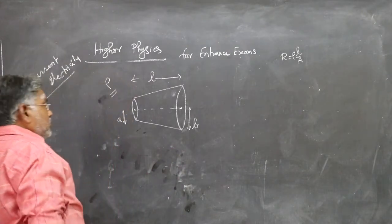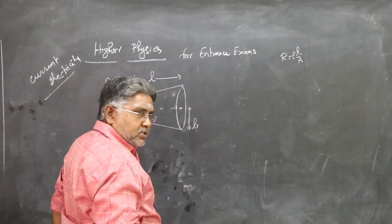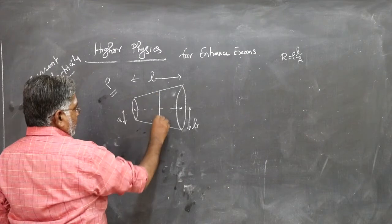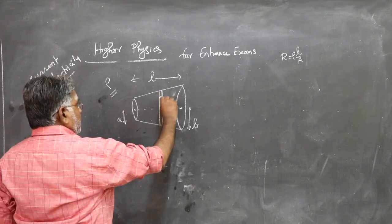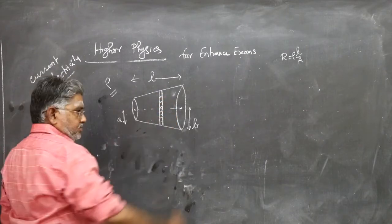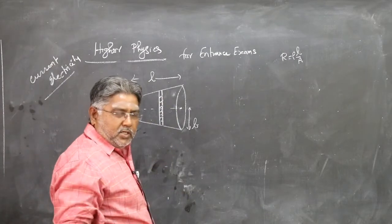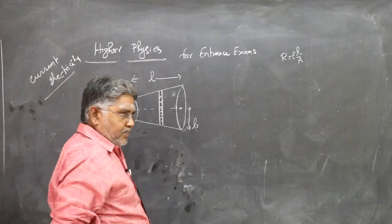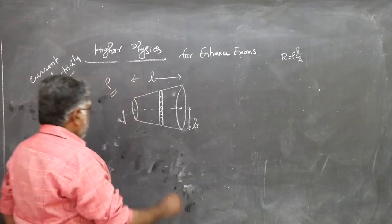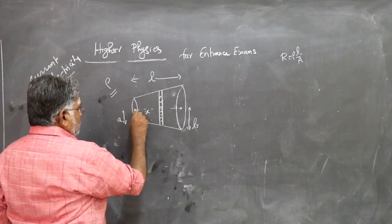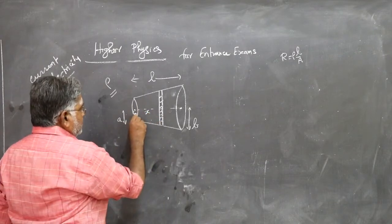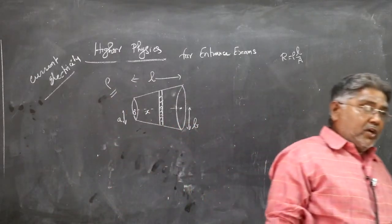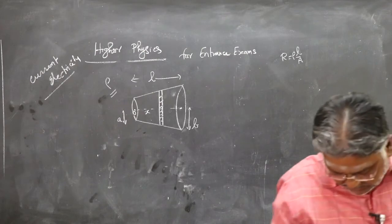Now we will see how to do this. What we will do in problems like this, we will consider an element. The element is so small, the element will be a circular disc because it is a solid cone. Say at a distance x from O. O is the center of the starting of the cone.